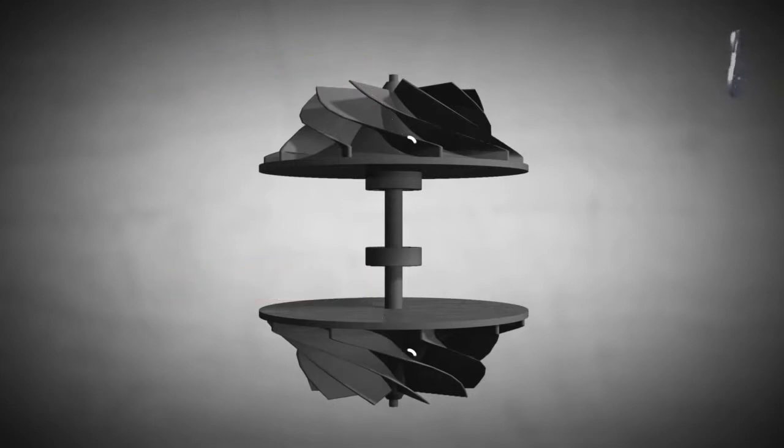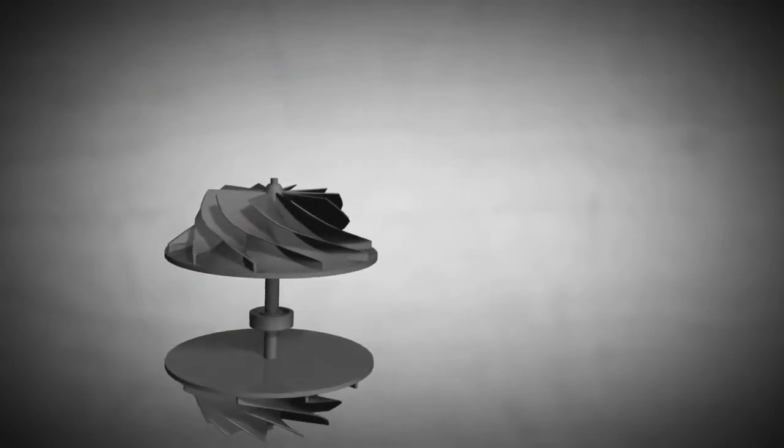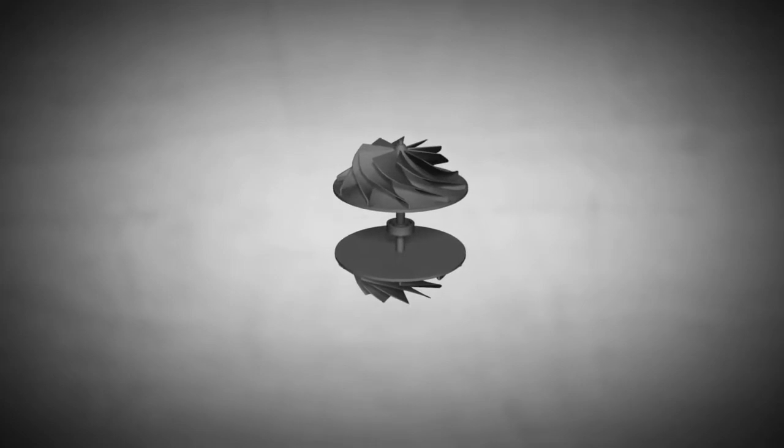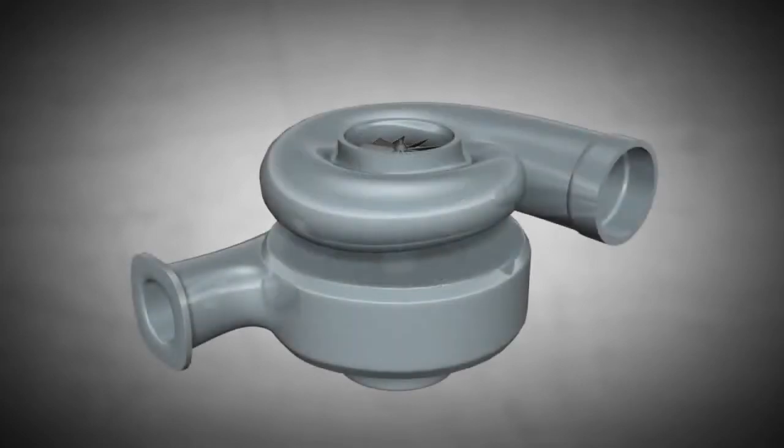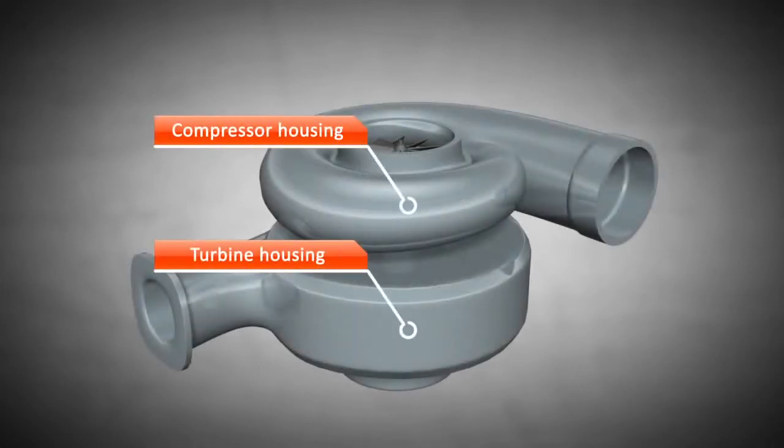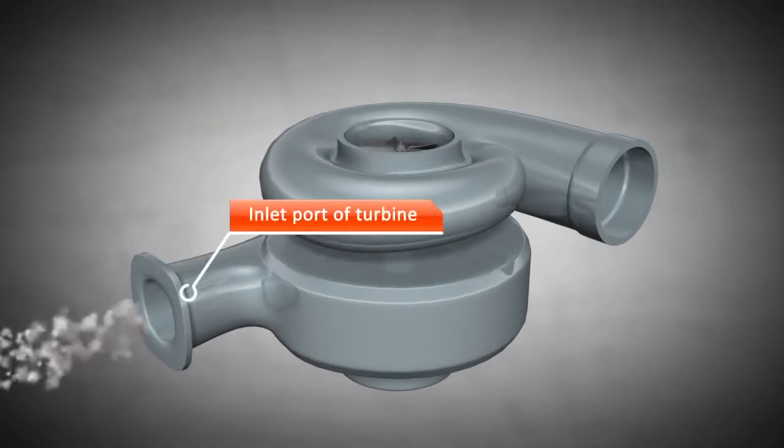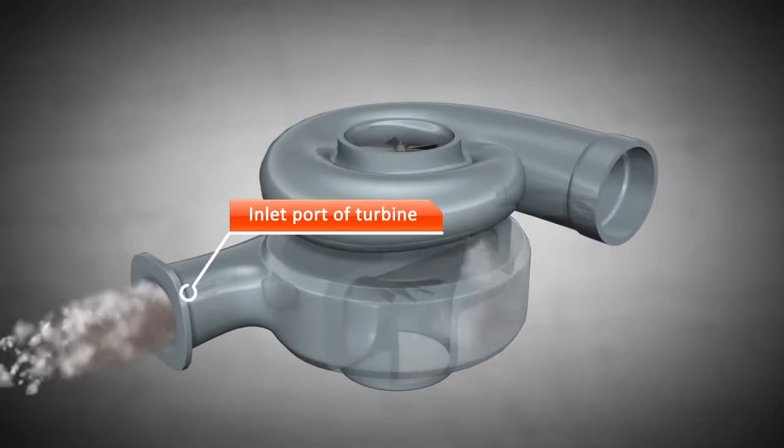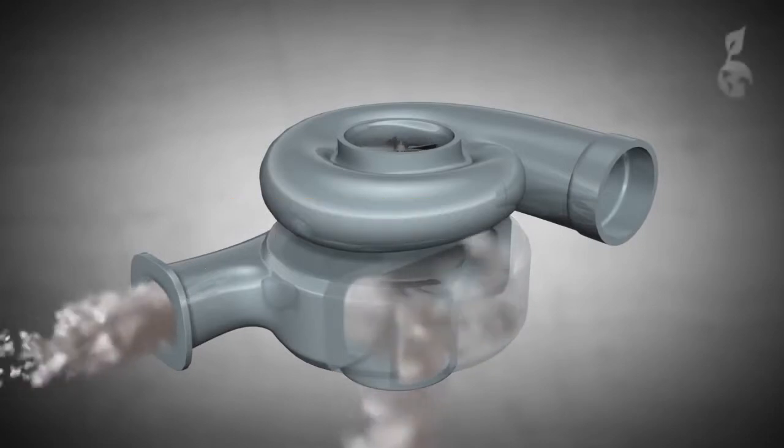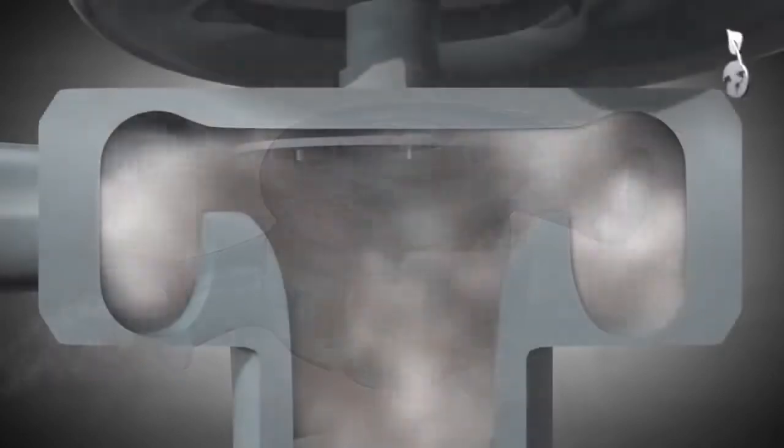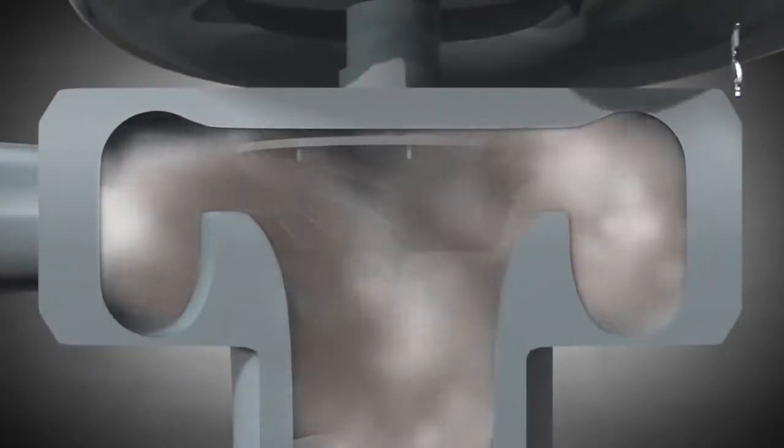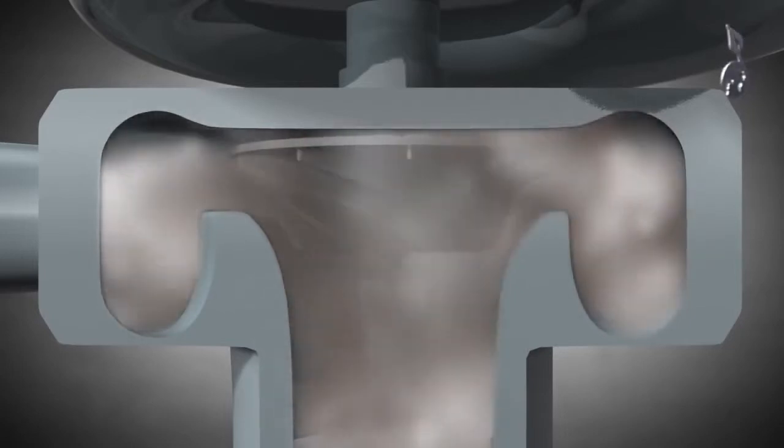The turbine wheel and the compressor wheel may look the same and are covered by a housing. The exhaust gas produced by the engine enters the turbine housing through the inlet port. At that point, thermal energy is converted into kinetic energy because of the constriction in the turbine. Consequently, the turbine is driven by kinetic energy.